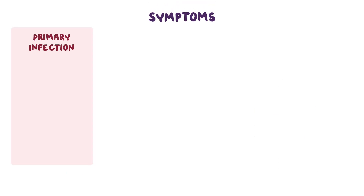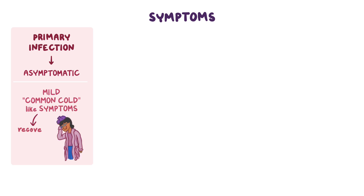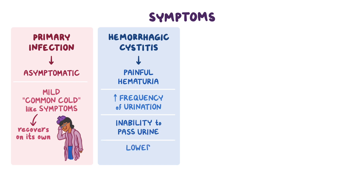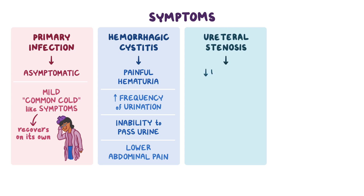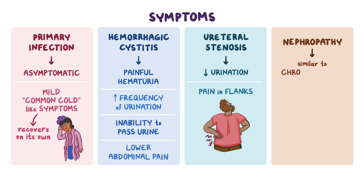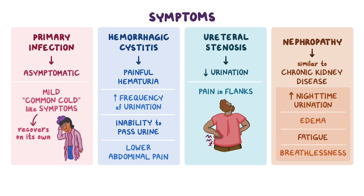Primary infection with BK virus is usually asymptomatic, or produces mild common cold-like symptoms that people can recover from on their own. Hemorrhagic cystitis usually presents with painful hematuria or bloody urine, increased frequency of urination, inability to pass urine due to obstruction by clots, and lower abdominal pain. Ureteral stenosis commonly presents with decreased urination and pain in the flanks. BK virus nephropathy symptoms are similar to those of chronic kidney disease, which include increased nocturnal urination, edema, fatigue, and breathlessness due to anemia.